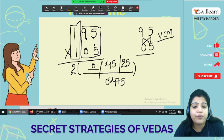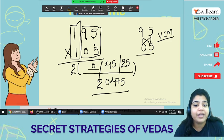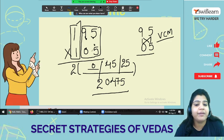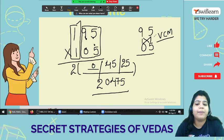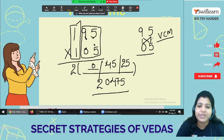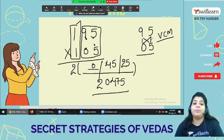So the second part answer should be in 4 digit. So here I'll write 0, 4, 7, 5 and this is your final answer. So instead of multiplying 5 times 5, 5 times 9, 5 times 1, then 0 times 5, no need to do. Directly you can apply this VCM.